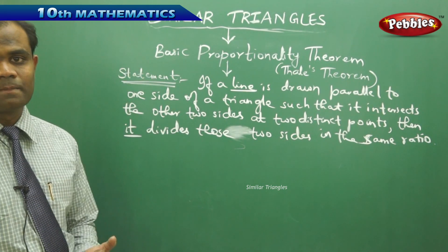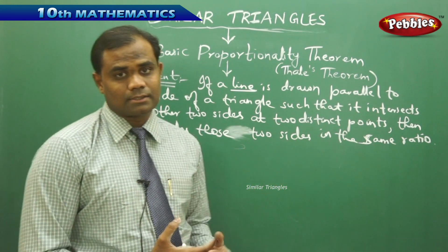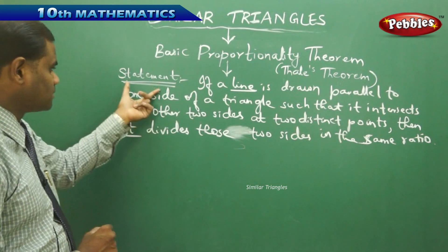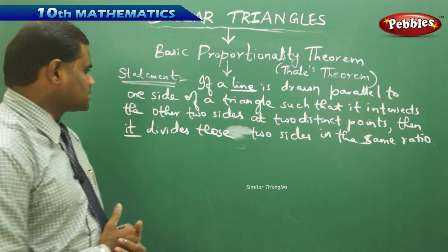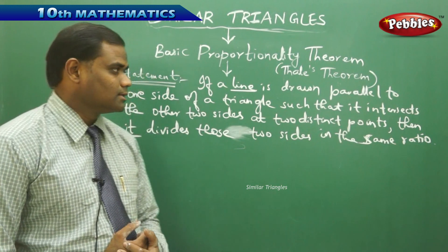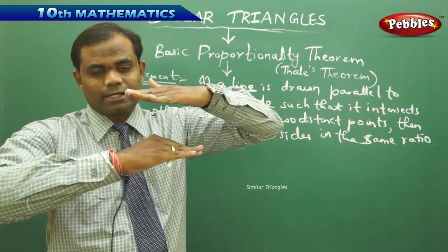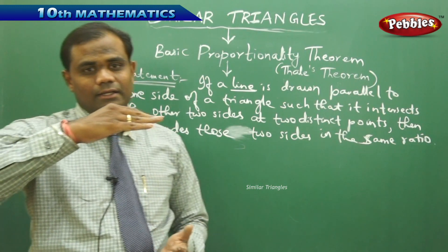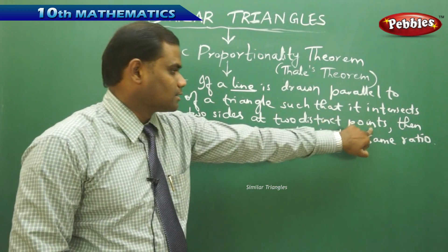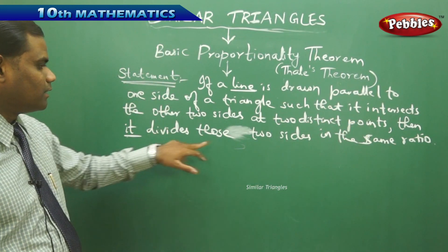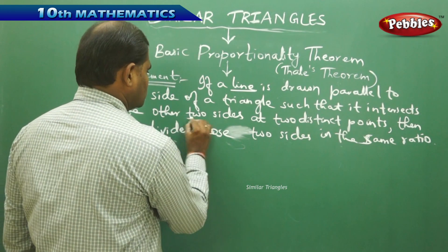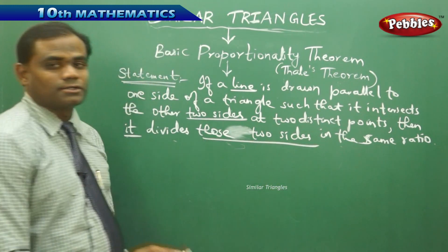Let's read the statement once more to understand each of its contents clearly. The Basic Proportionality Theorem, also referred to as Thales' theorem, states: if a line is drawn parallel to one side of a triangle such that it intersects the other two sides at two distinct points, then that line divides the other two sides in the same ratio.